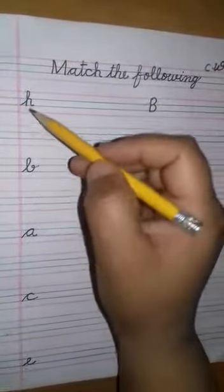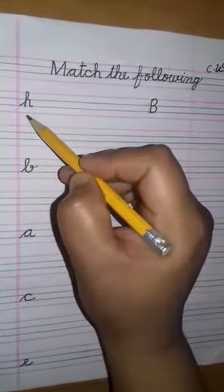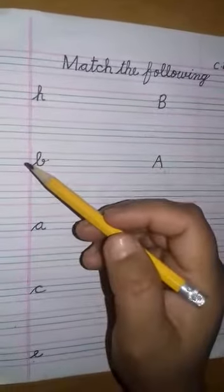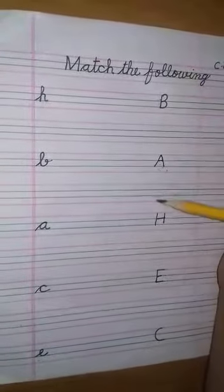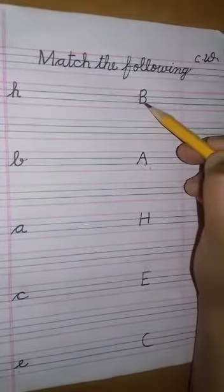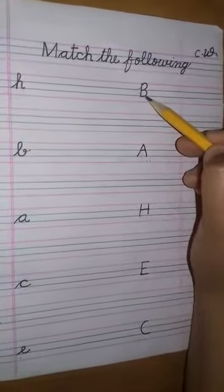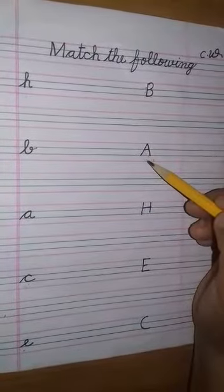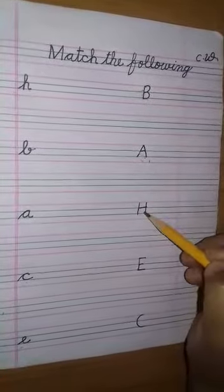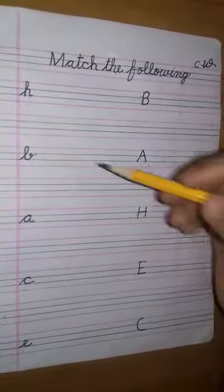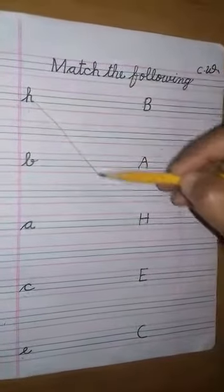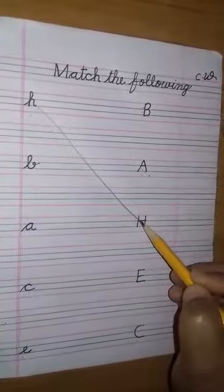This is cursive H. So we have to match it with capital H. Where is written capital H? Is this capital H? No, this is capital B. Is this capital H? No, this is capital A. Where is written capital H? Yes. Now draw a line to match cursive H with capital H. H is H.